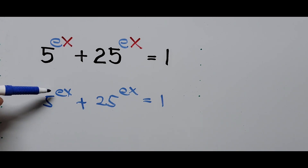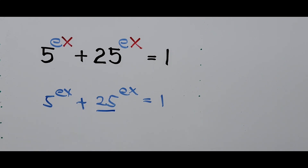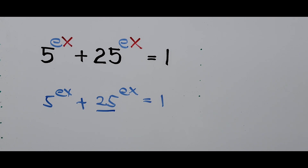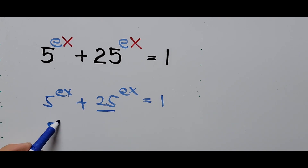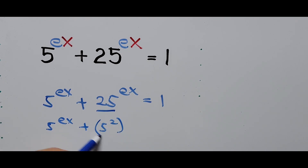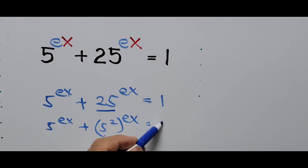Let's keep going. We focus our attention on the second term: the base 25 can be written the same as 5 squared, so the equation becomes 5 to the power of ex plus 5 squared to the power of ex equals 1.